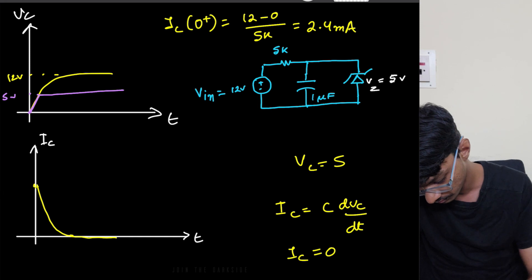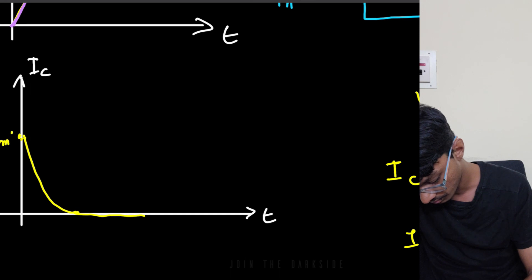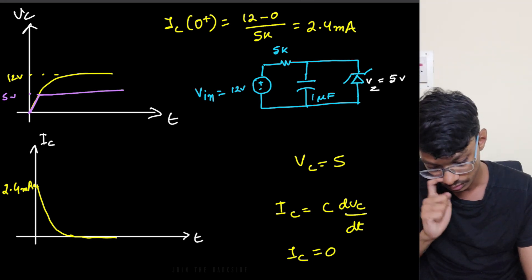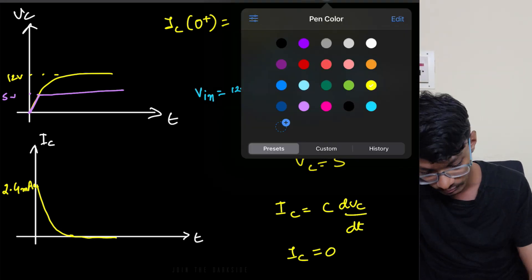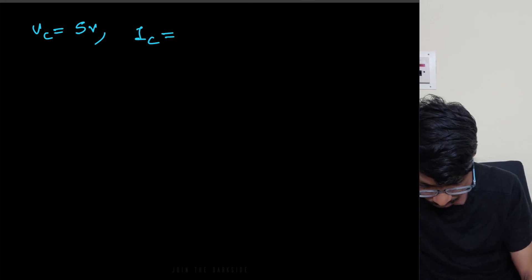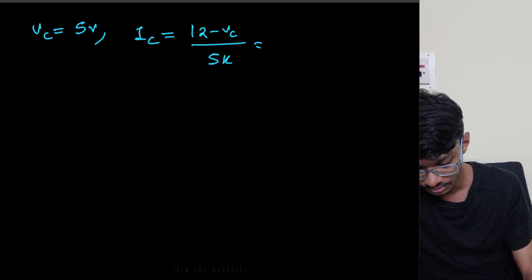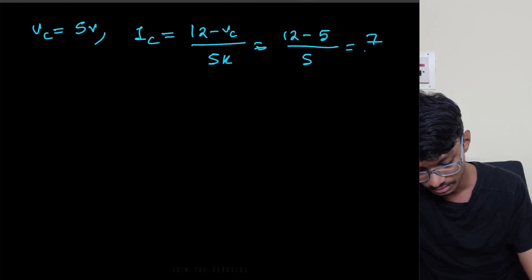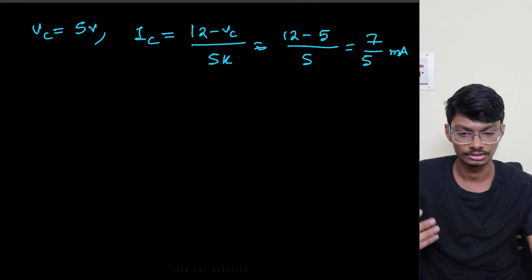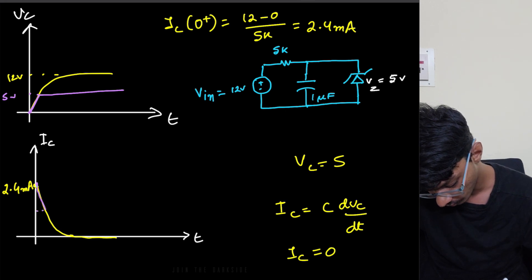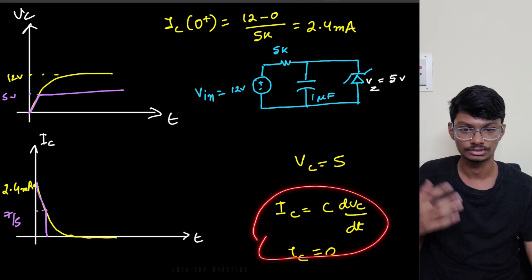If the Zener diode wasn't there, the initial current IC(0+) = (12 - 0) / 5kΩ = 2.4 milliamps, and at steady state it goes to zero. With the Zener diode present, at VC = 5V the capacitor current is IC = (12 - 5) / 5kΩ = 7/5 milliamps = 1.4 milliamps. So from 2.4 milliamps, the current follows the curve down to 1.4 milliamps, then suddenly drops to zero.